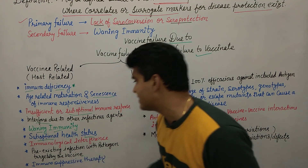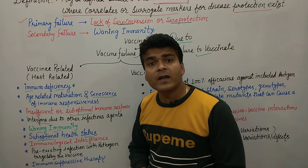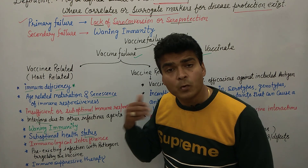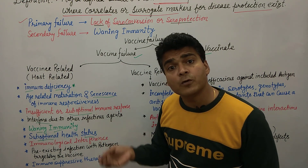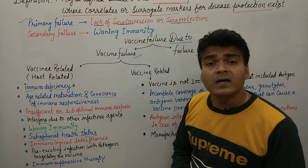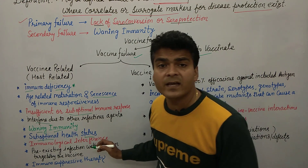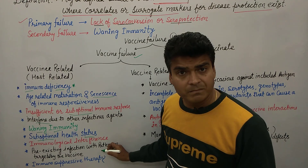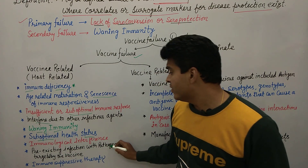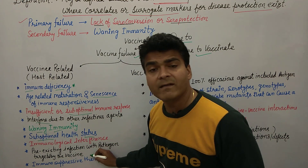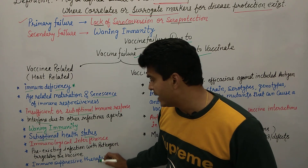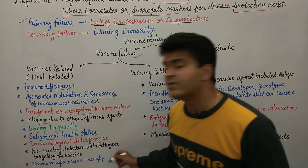Then pre-existing infection with the pathogen targeted by the vaccine. Suppose a person is being given the COVID vaccine but that person already has COVID at that time. Because of this, vaccination failure can occur — because the pathogen already exists there, meaning there is a pre-existing infection with the pathogen targeted by the vaccine. In this case, immune power cannot develop properly.